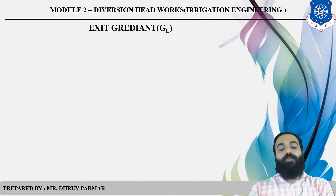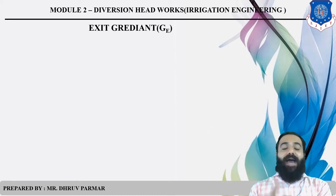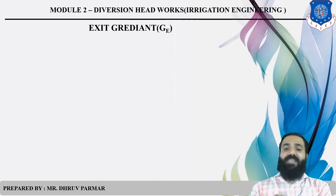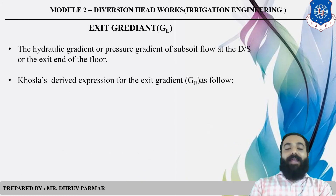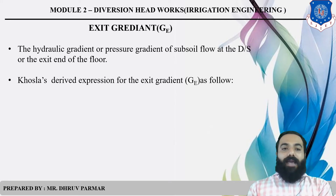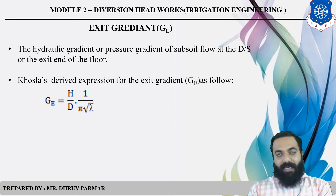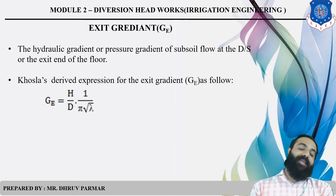Next we go to exit gradient. The exit gradient is the slope provided at the exit point, denoted by GE. Khosla derived the expression: GE = (H/d) × (1/π√λ). This is the formula to find the exit gradient.